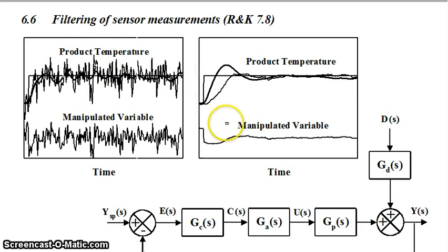With a proper filter in place, then what can happen is that your manipulated variable will no longer be sent jiggling up and down so much, and then your overall actual temperature is going to settle down to a steady state as well fairly quickly, and it also will not jiggle around as much.